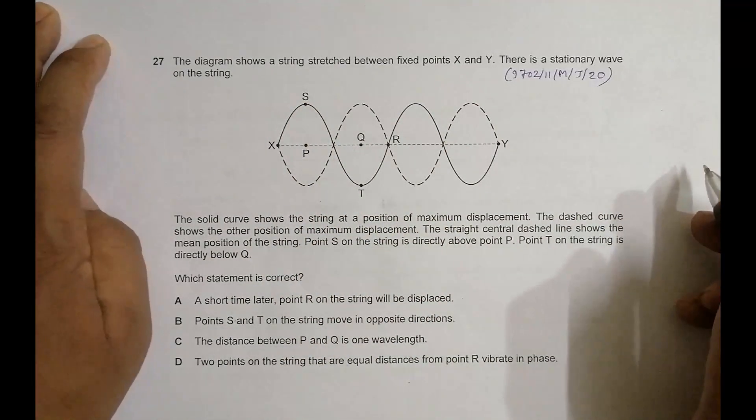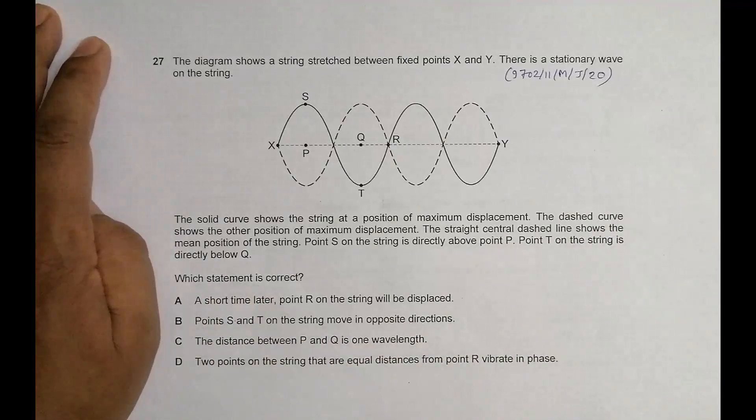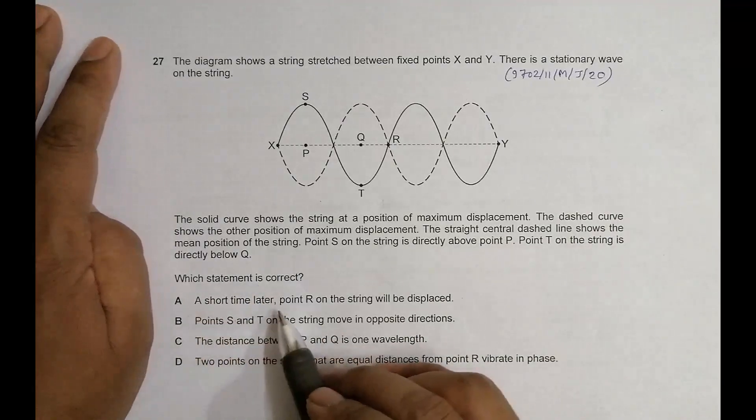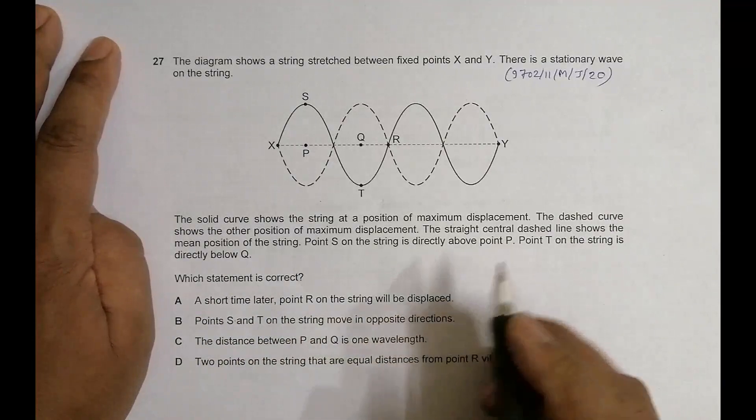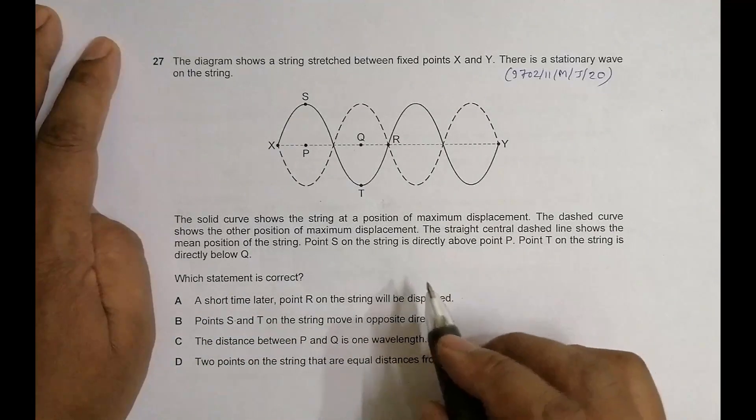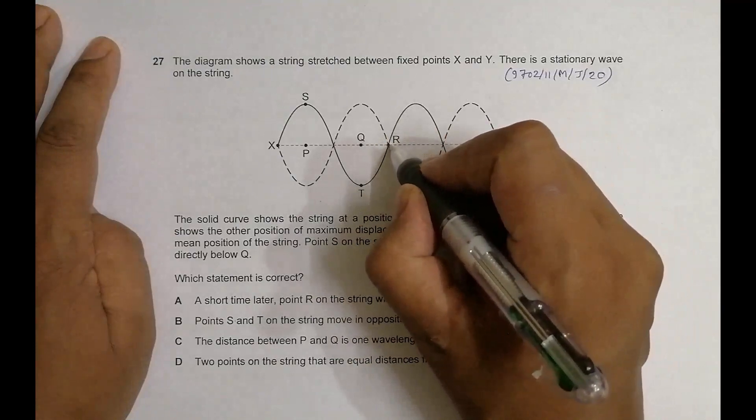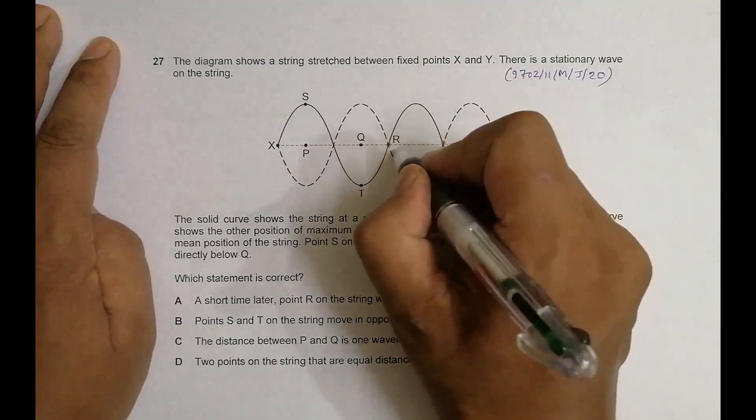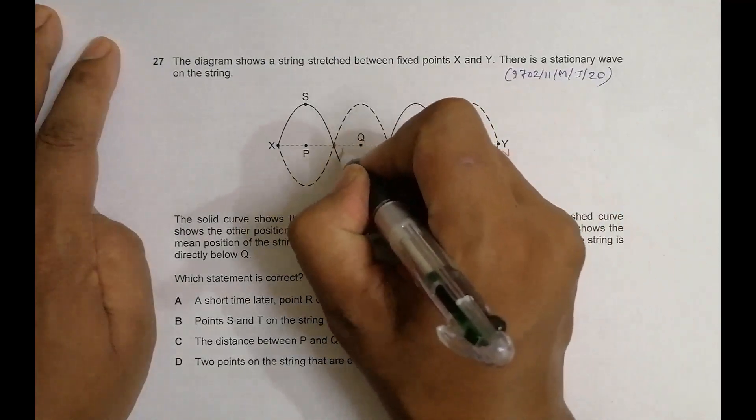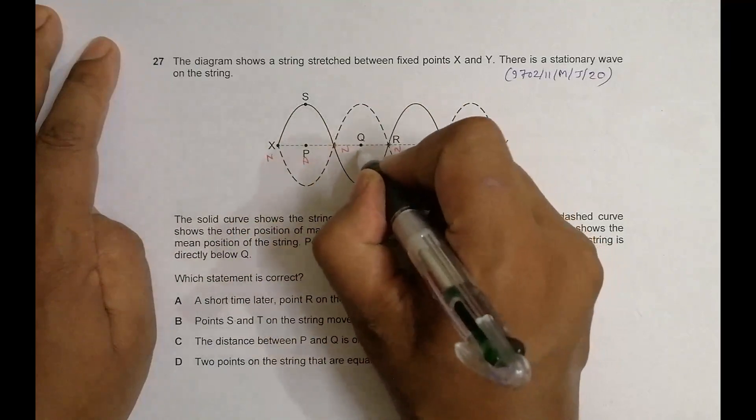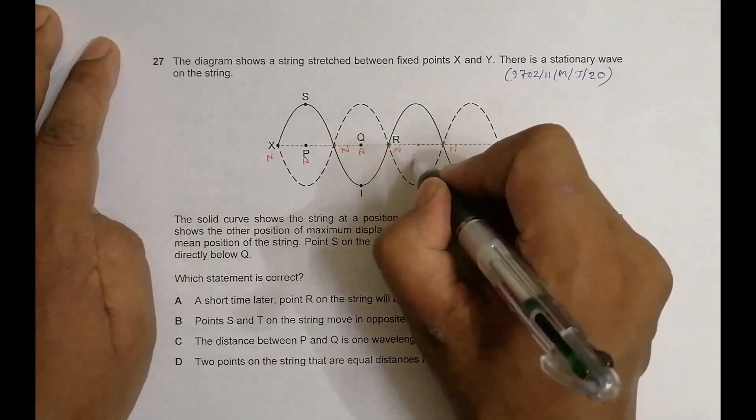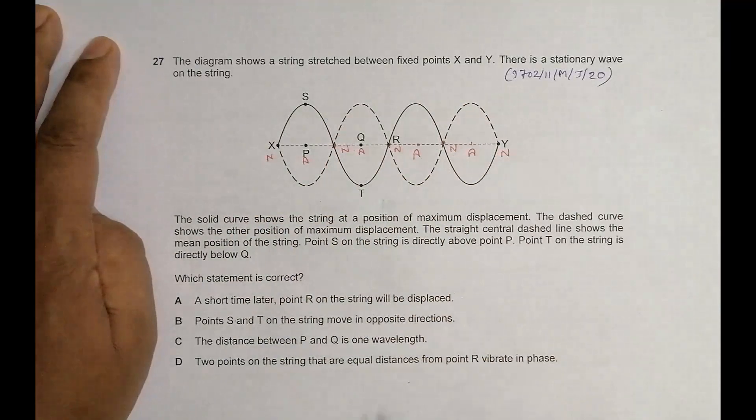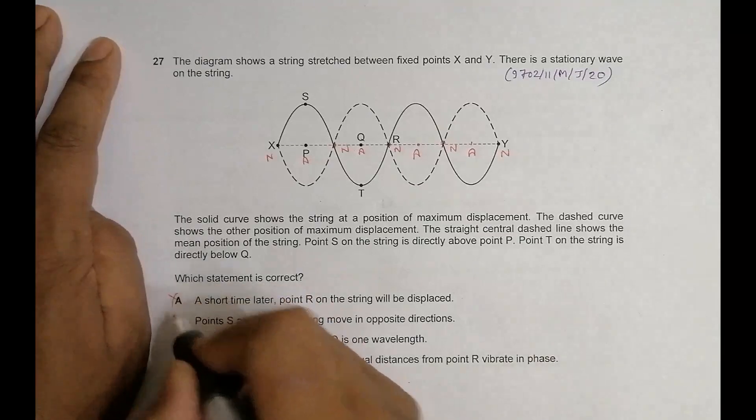Which statement is correct? The first one: a short time later, point R on the string will be displaced. This is not true because R is the node point here - node, node, node, node, and antinode. T is a node, this is antinode, and again antinode. So R is a fixed point, that's why it cannot be displaced because it's the node point. So it's a wrong choice.